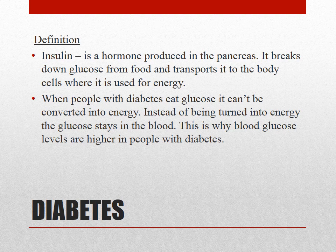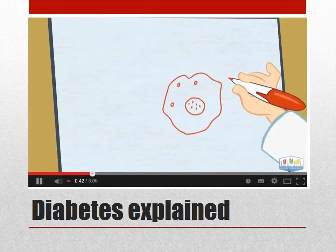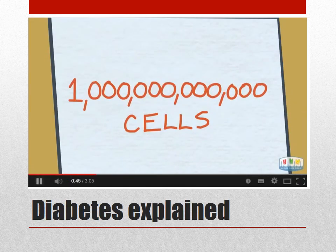We're going to start with diabetes. The main player with diabetes is insulin. Insulin is a hormone produced in the pancreas - it breaks down glucose from food and transports it to the body cells where it's used for energy. Your body gets a message when you have food with glucose in it and the message is sent to the pancreas. Insulin is then released and the body uses it to carry glucose around the body for energy. People with diabetes eat glucose but it isn't converted into energy; instead the glucose stays in the blood and blood sugar levels remain quite high.